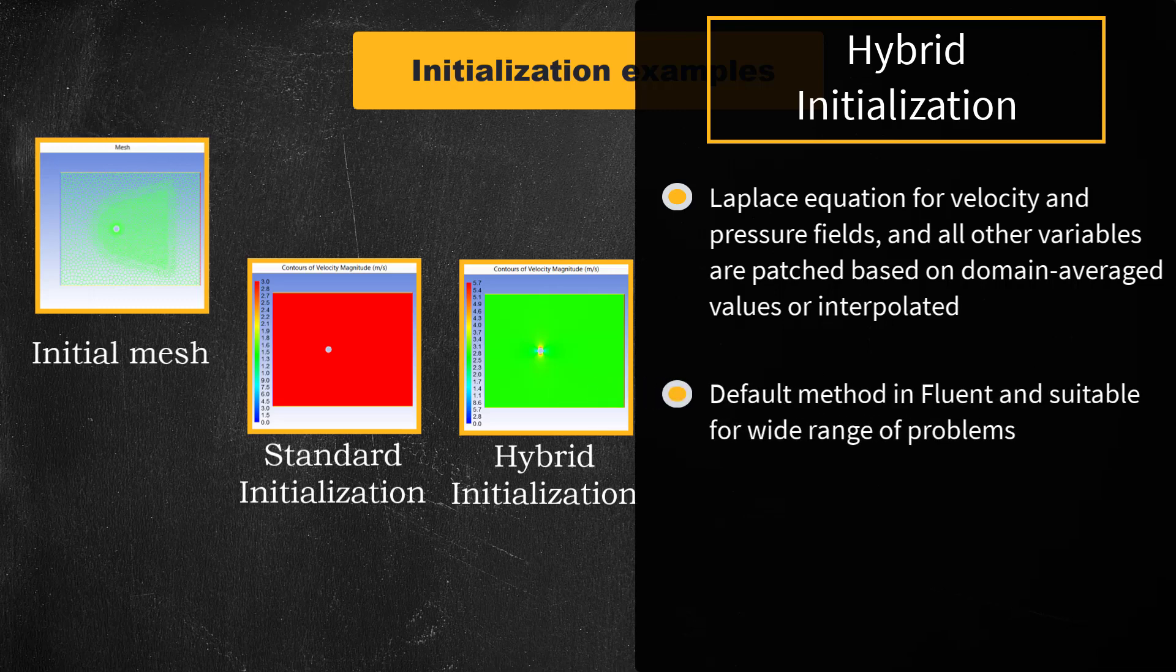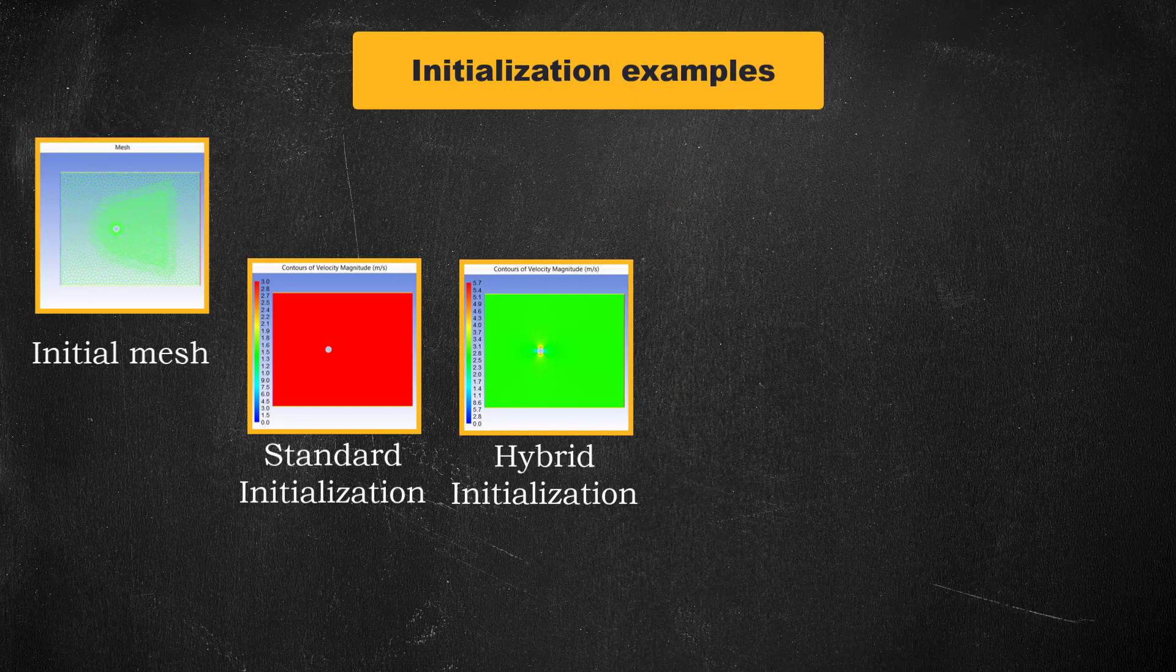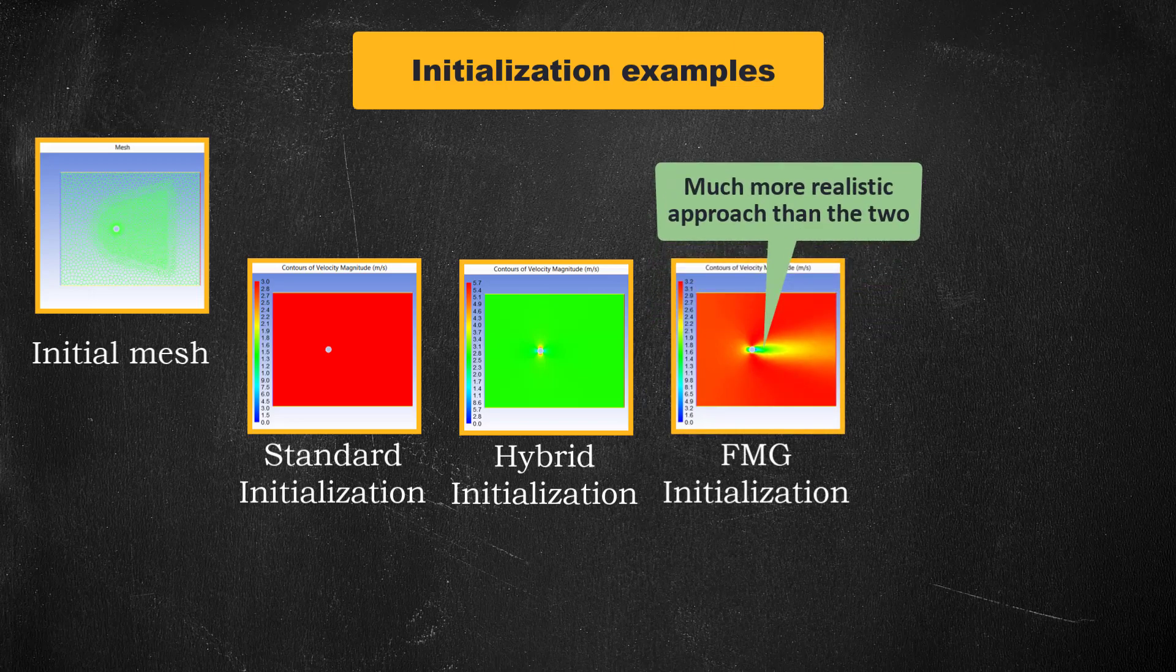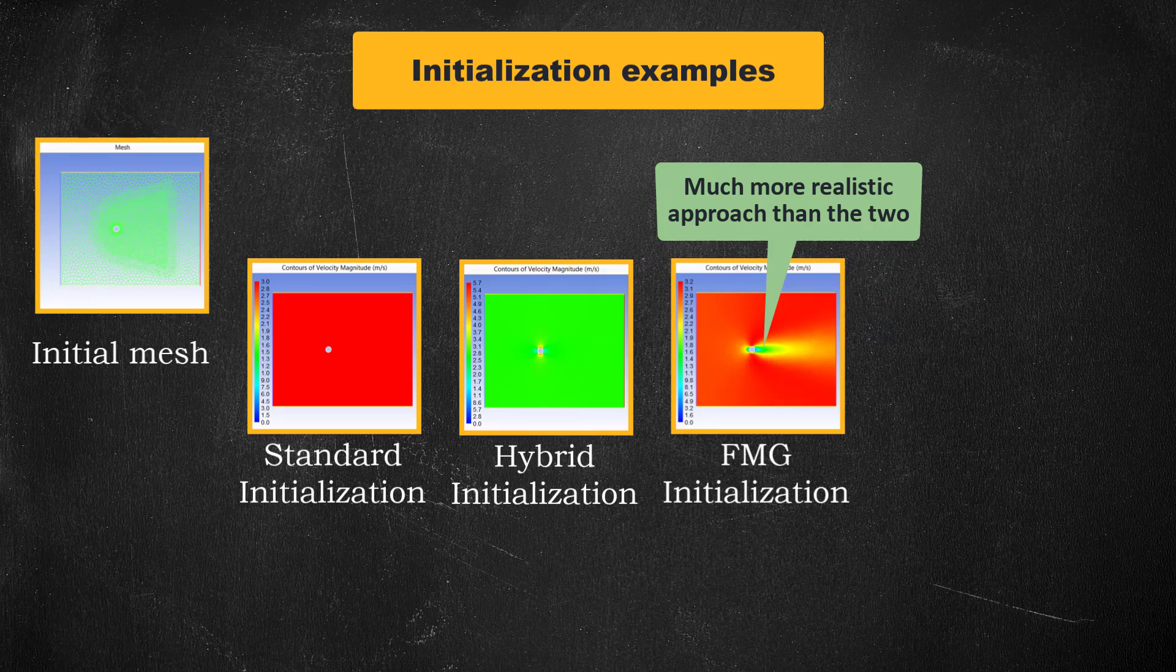This is the default initialization method in ANSYS Fluent and works well for a wide range of problems. Full multigrid, also known as FMG initialization method, provides much more realistic non-uniform initial values as seen from the contours.